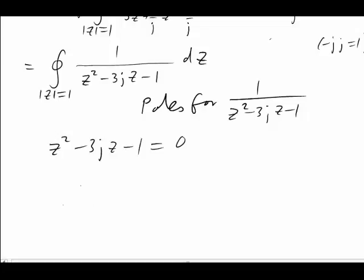So we set z squared minus 3jz minus 1 equals 0. And so z is 3j plus or minus square root of negative 3j all squared minus 4 times minus 1 all over 2.